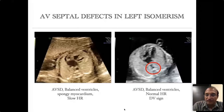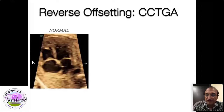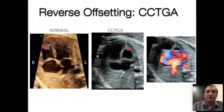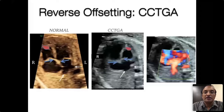Now this is reverse offsetting. Normally the tricuspid valve is at the lower level; in reverse offsetting everything looks the same but the left-sided valve has the lower insertion, as shown here. However, this left-sided valve is actually the tricuspid valve, because the moderator band — shown by the red circle — is on the left side, confirming the left-sided ventricle is morphologically a right ventricle. This is CC-TGA.